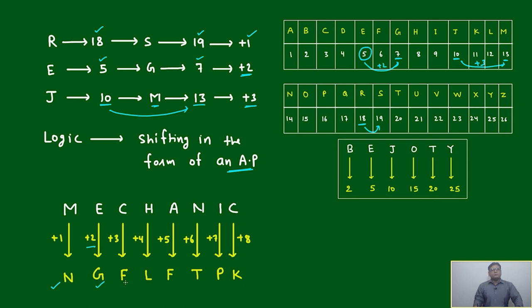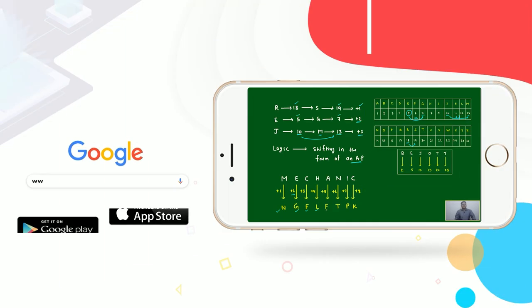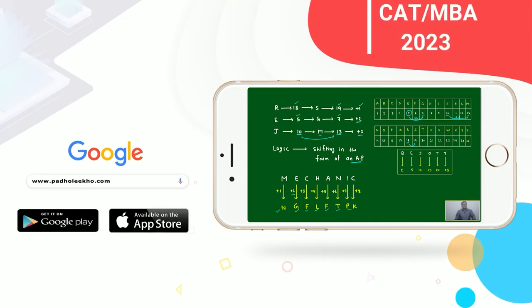C jumps by 3, it will be F. H jumps by 4, it will be L. A jumps by 5, it is F. Similar way, the code of MECHANIC in the same language will come: N, G, F, L, F, T.